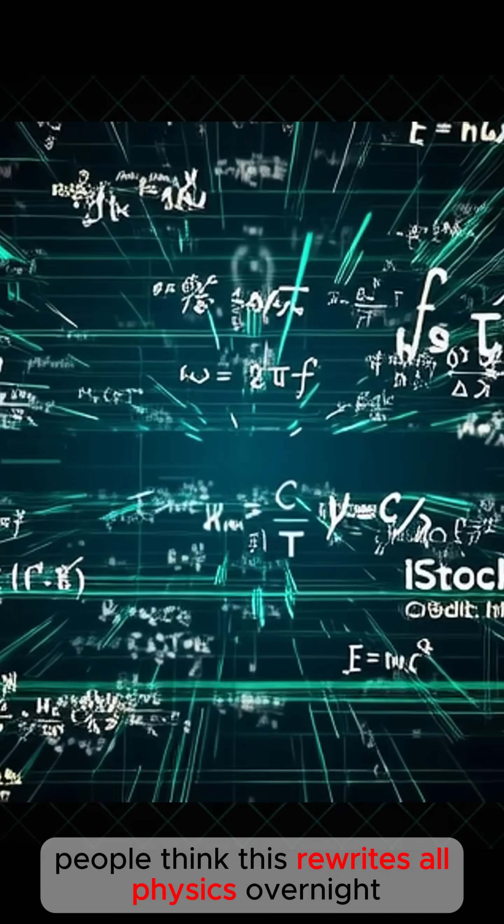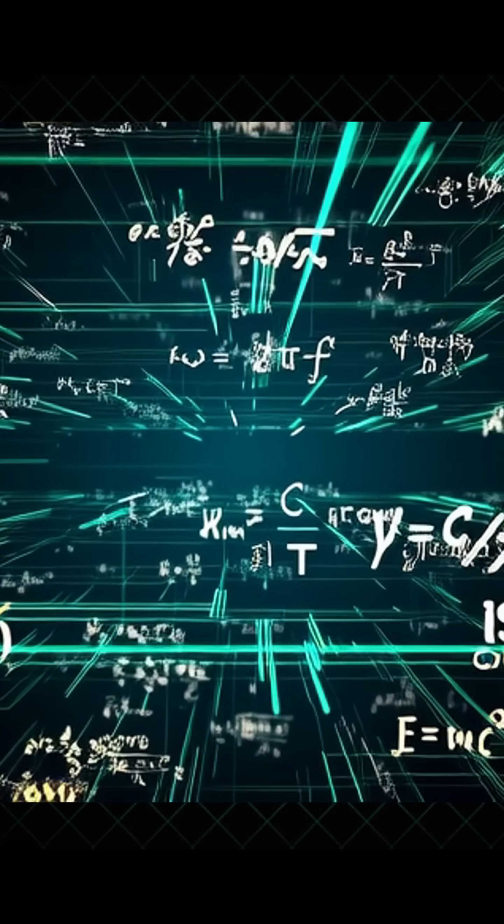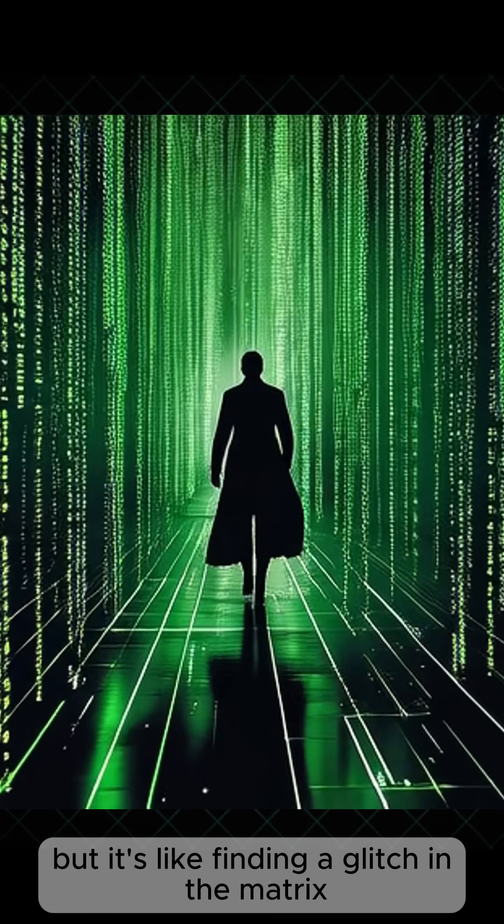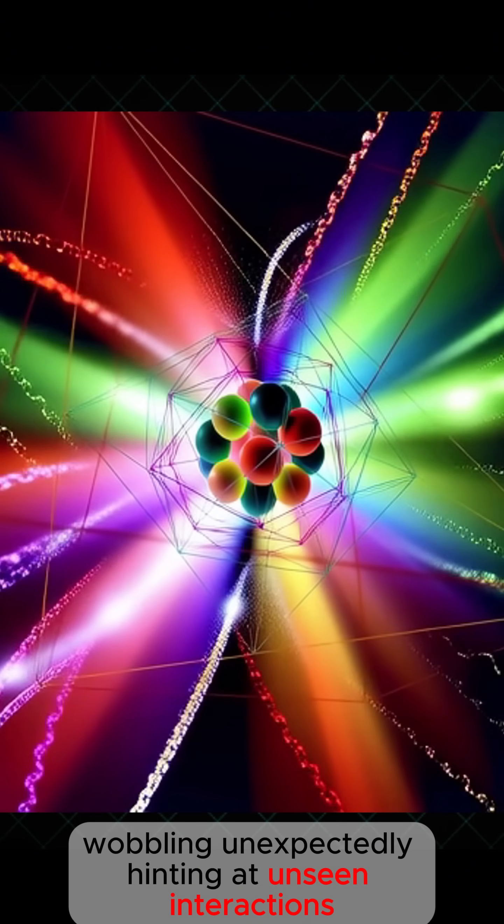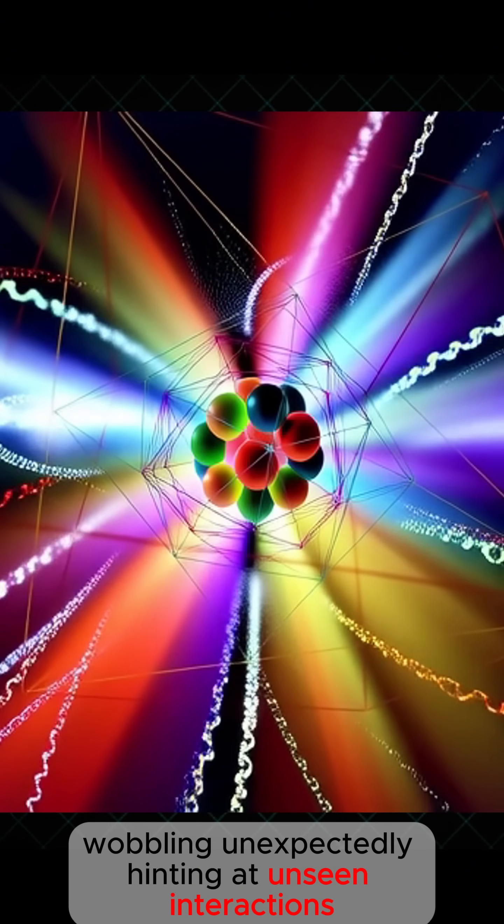People think this rewrites all physics overnight, but it's like finding a glitch in the matrix. Experiments show weird particles called muons wobbling unexpectedly, hinting at unseen interactions.